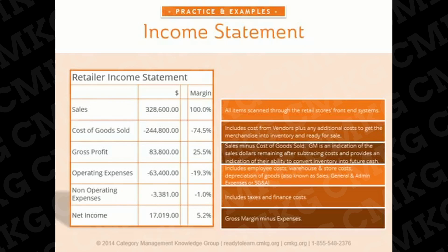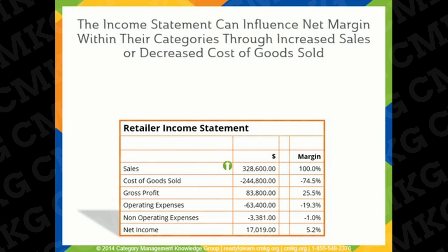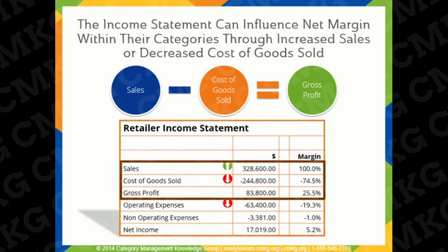Those are the basics of the income statement. When you look at this retailer income statement, think about how the category management team can influence net margin within their categories. They can either increase sales — defined as all items scanned through the retail store's front-end system — decrease cost of goods sold, and they have limited influence in decreasing operating expenses. Category management is not the only department responsible for the results of the income statement, but for the purposes of this training course, we'll be focusing on the areas they are most accountable for: sales and cost of goods sold.